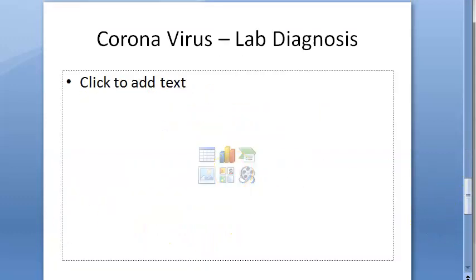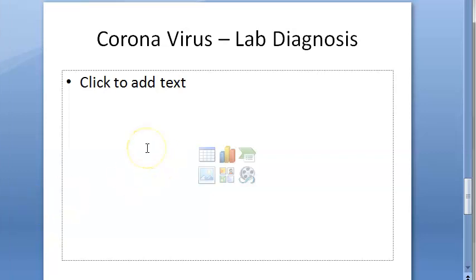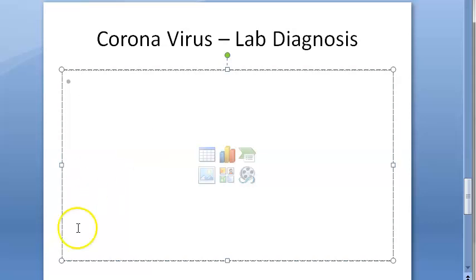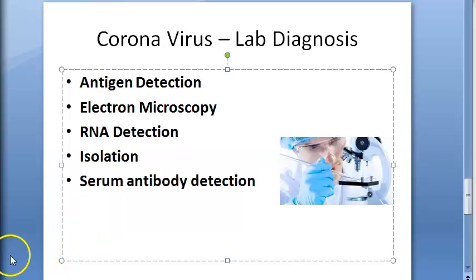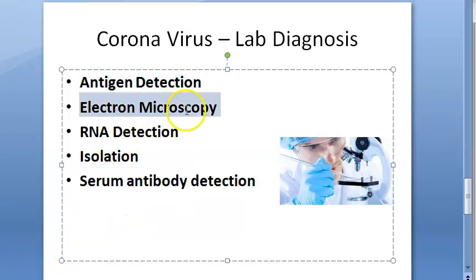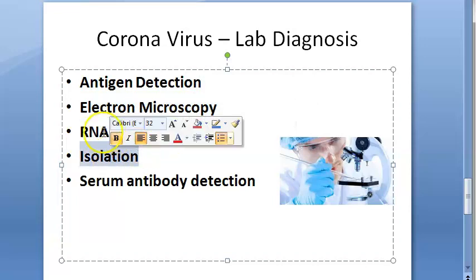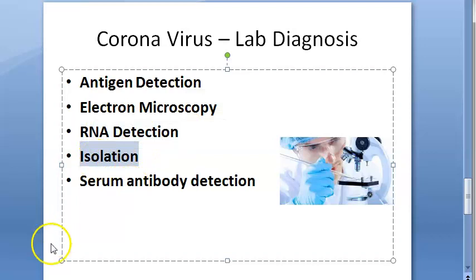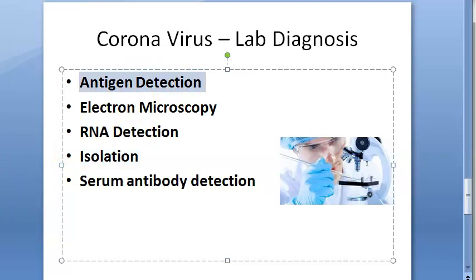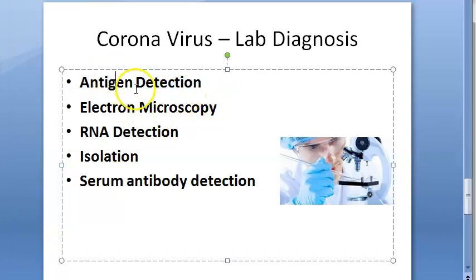Let us move on to the lab diagnosis of coronavirus. To report whether a person is positive or negative, you will do antigen detection, antibody detection, and detection under the electron microscope. RNA detection — because it is an RNA virus — and isolation of the virus. For antigen detection, coronavirus antigens in the respiratory epithelial cells can be detected using ELISA with specific monoclonal antibodies.